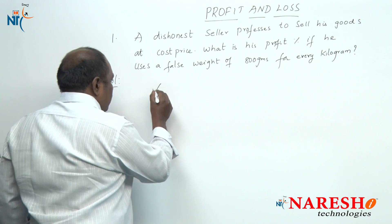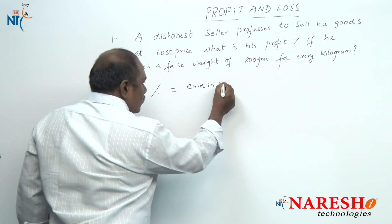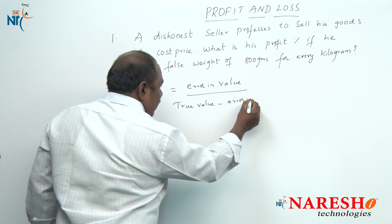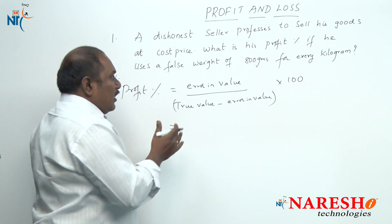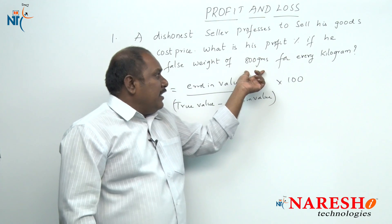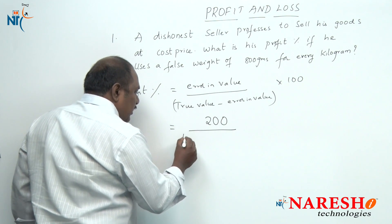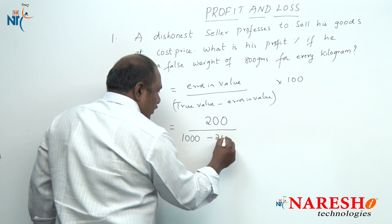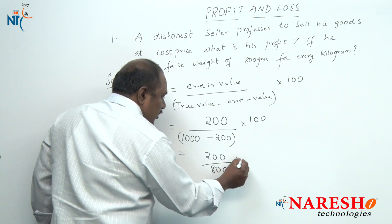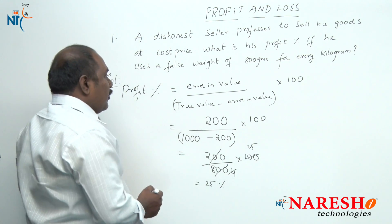By formula: profit percentage = (error in value) / (true value − error in value) × 100. The shopkeeper should sell 1 kilogram, but instead sells 800 grams, so the error is 200 grams. Applying the formula: 200 / (1000 − 200) × 100 = 200 / 800 × 100 = 25. So the answer is a profit of 25 percent.